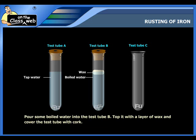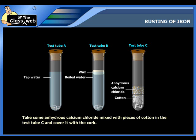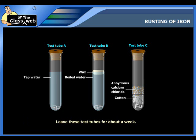Pour some boiled water into the test tube B, top it with a layer of wax and cover the test tube with cork. Take some anhydrous calcium chloride mixed with pieces of cotton in the test tube C and cover it with a cork. Leave these test tubes for a week.